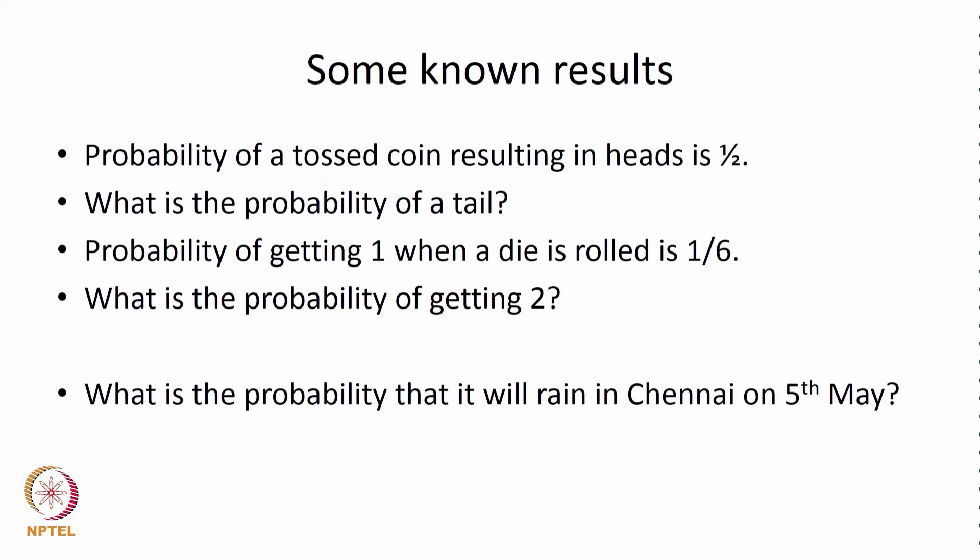The other way of looking at it is to conduct a large number of experiments and generalize. We will see about that as we move along. So, probability of getting a tail is half.